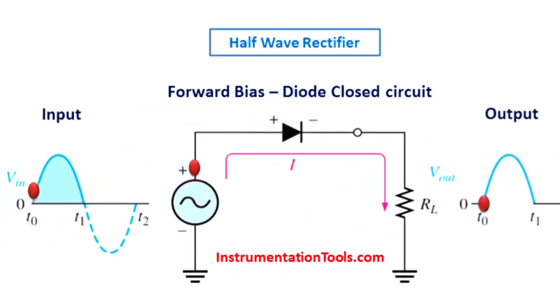During forward bias, the diode exhibits low resistance, ideally zero resistance for an ideal diode, and allows current to flow easily in the forward direction.